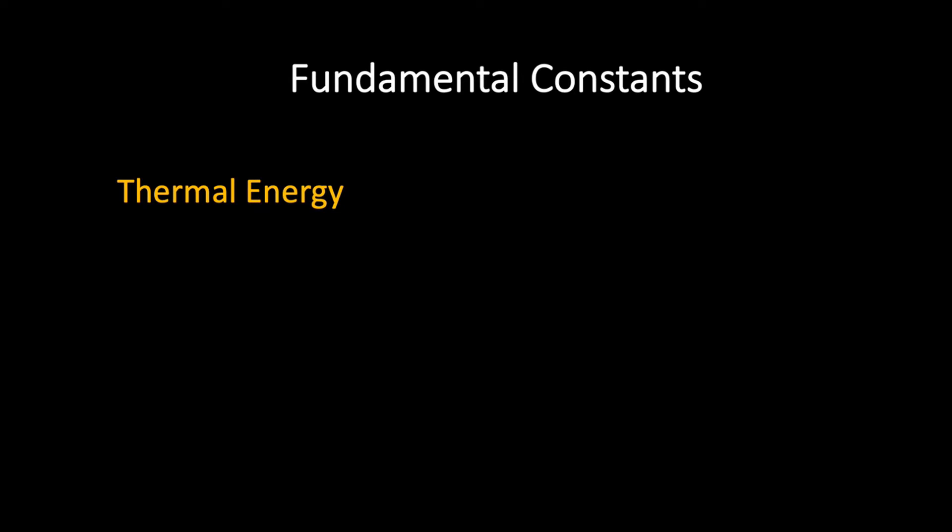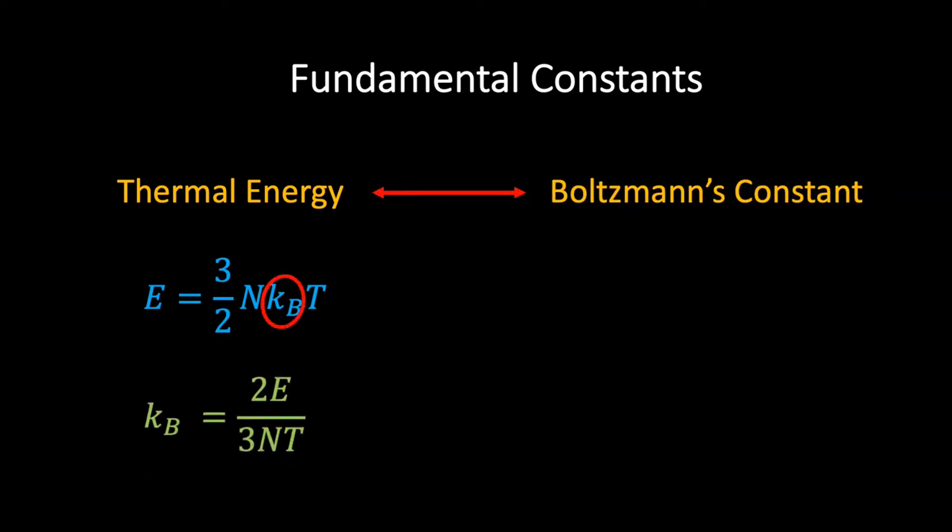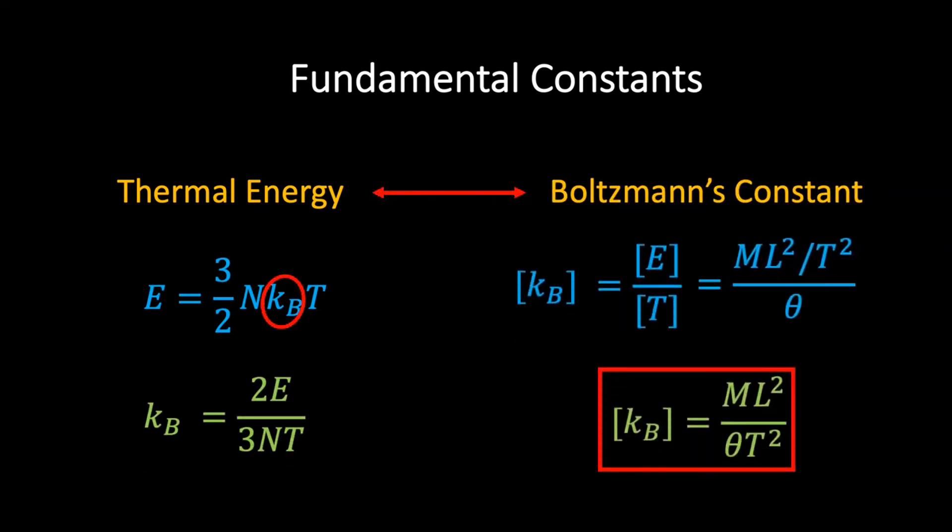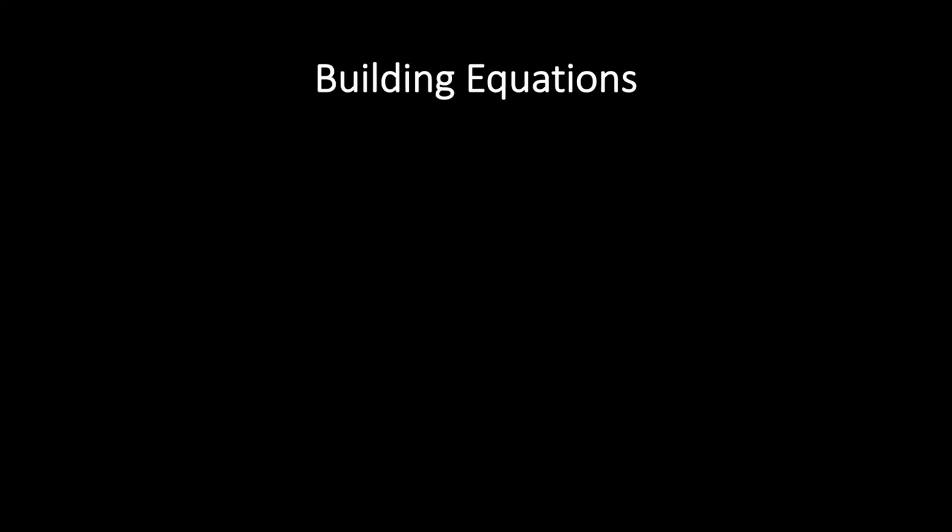According to the kinetic theory of gases, for a system of n particles at temperature T, such as an ideal gas, the thermal energy is related to the temperature by the equation E equals 3/2 nkT, where k is Boltzmann's constant. By rearranging this equation for Boltzmann's constant, we see that the dimensions of Boltzmann's constant is given by ML² over theta T².